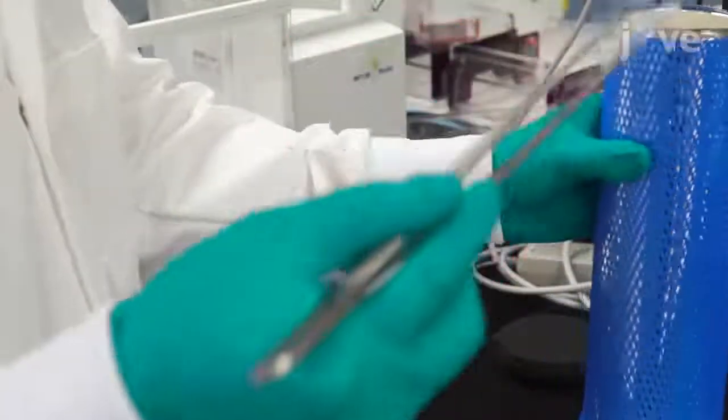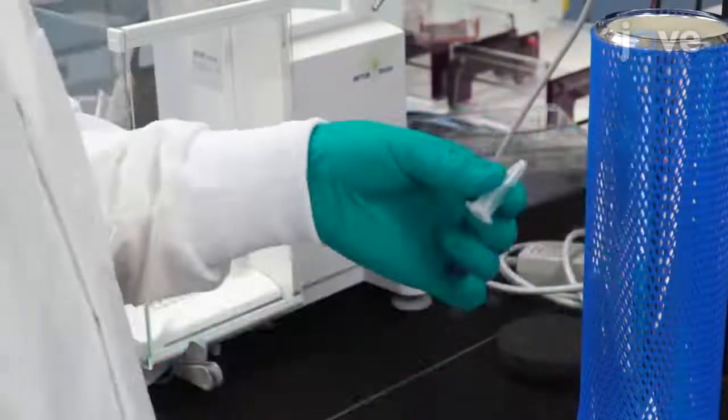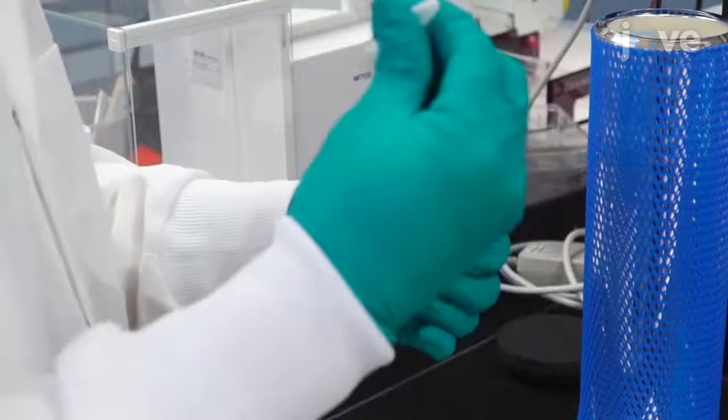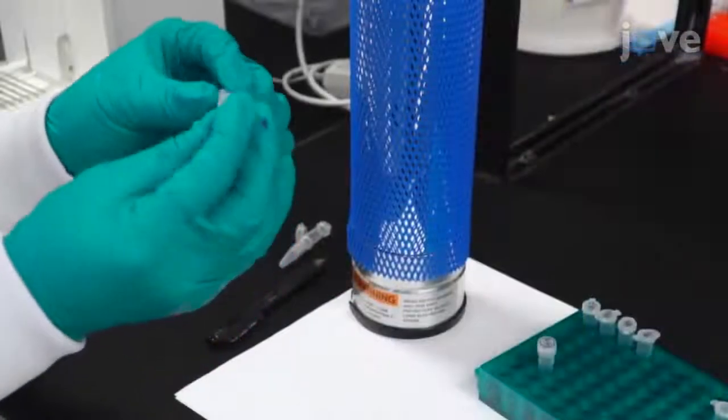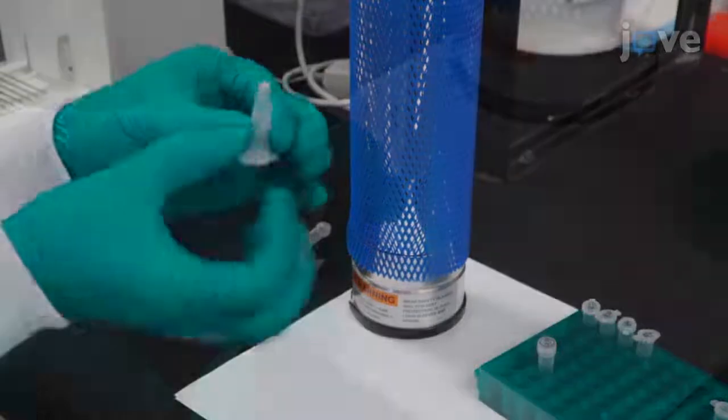Use long forceps to remove the 1.5-milliliter sample tube from the liquid nitrogen dewar. Wearing nitrile gloves, grab the frozen tube, invert it, and sharply pound the tube lid.